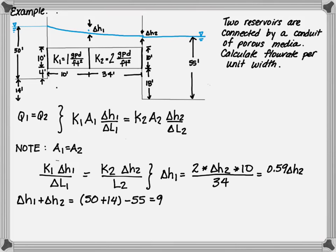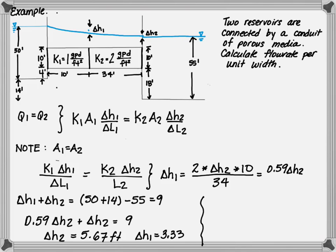Next, we need a second equation: delta H1 plus delta H2 equals the difference in the water surface. Substituting 0.59 into the equation, we get delta H2 equals 5.67 and delta H1 equals 3.33. With that completed, we're ready to find the flow rate.